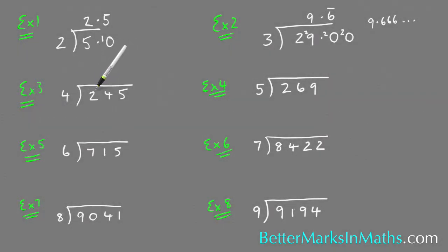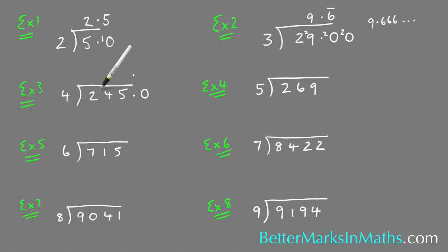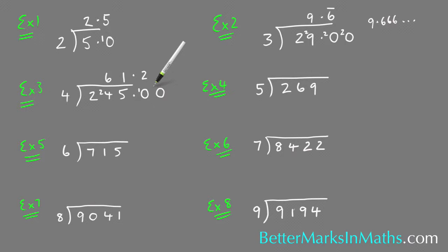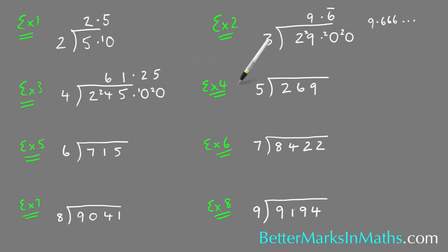In example three: how many fours in 245? I'm going to set it up with a point and a zero here. How many fours in two? None, so carry the two. How many fours in 24? There's six with none left over. How many fours in five? There's one with one left over. How many fours in ten? There's two with two left over. Then how many fours in 20? There's five. So how many fours in 245? The answer is 61.25.